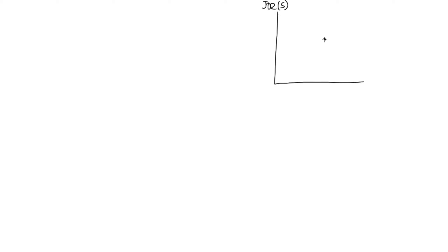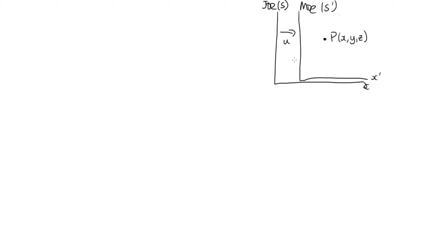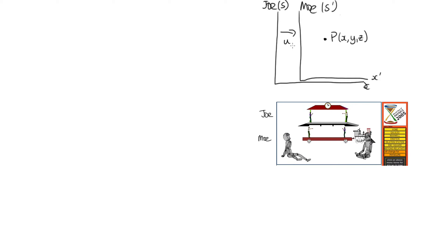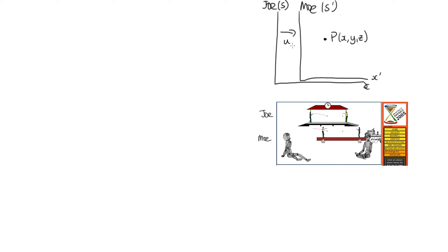Imagine that we have Joe here in reference frame S. A point P in this reference frame is given by x, y, z — an x coordinate, a y coordinate, and a z coordinate. Now imagine that Mo is moving relative to Joe. This is Mo's reference frame, called reference frame S prime, and it is moving along the x-axis of Joe's reference frame with a speed u. Physically, you can imagine Joe being on the platform and Mo on the train.